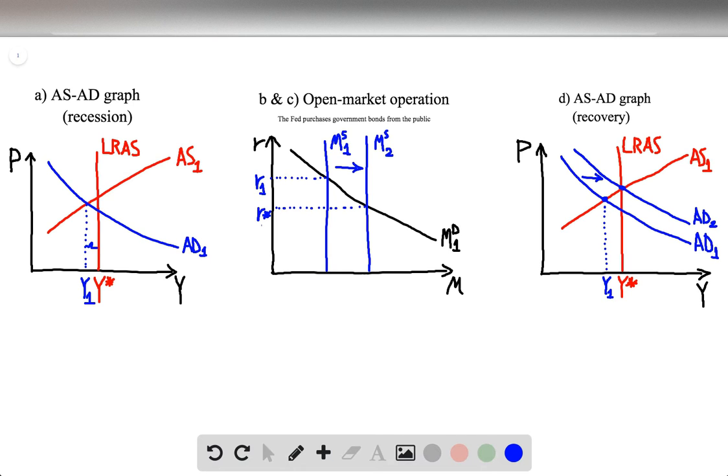But here, we're being asked to determine an open market operation. And the standard one is that the Fed will purchase government bonds from the public.